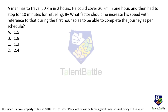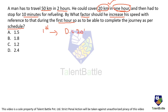A man has to travel 50 kilometers in 2 hours. He covered 20 kilometers in 1 hour, then had to stop for 10 minutes for refueling. By what factor should he increase his speed relative to the first hour to complete the journey on schedule? First, he traveled 20 kilometers in 1 hour, so his initial speed equals 20 divided by 1, which is 20 kilometers per hour.